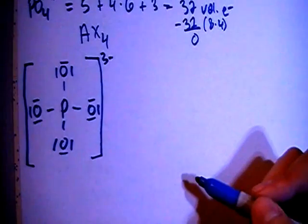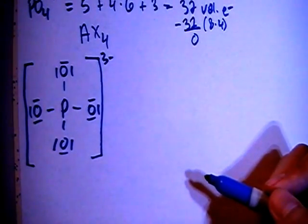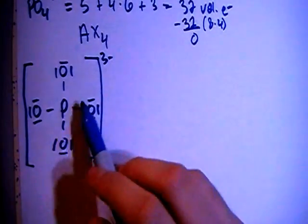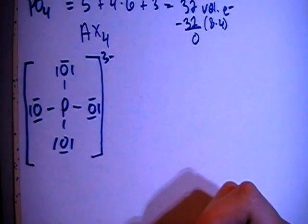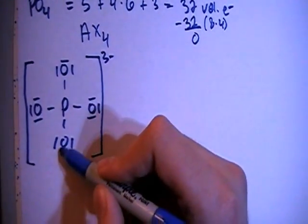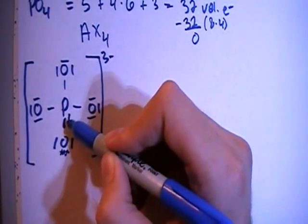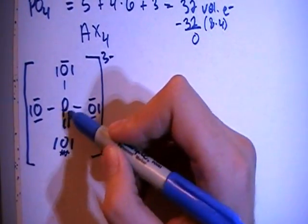but if you were to check the formal charges, you're going to have a bunch of plus and minus 1s. And you want to have as many zeros for each of these atoms as possible. So what we're going to end up doing is moving one of these non-bonding pairs on one oxygen to form a double bond to the phosphorus.